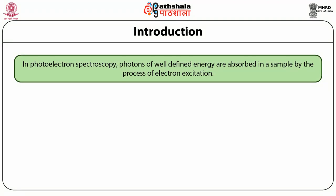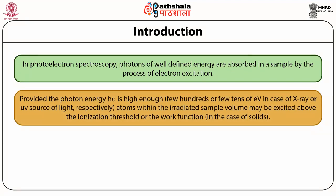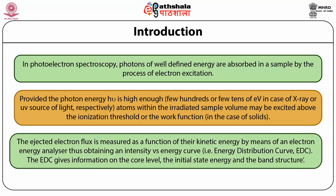In photoelectron spectroscopy, photons of well-defined energy are absorbed in a sample by the process of electron excitation. Provided the photon energy hν is high enough — that is, a few hundreds of electron volts in case of X-rays or a few tens of electron volts for UV sources — atoms within the irradiated sample volume may be excited above the ionization threshold or the work function in the case of a solid sample. The ejected electron flux is measured as a function of their kinetic energy by means of an electron energy analyzer, thus obtaining an intensity versus energy curve, commonly known as the energy distribution curve or EDC.